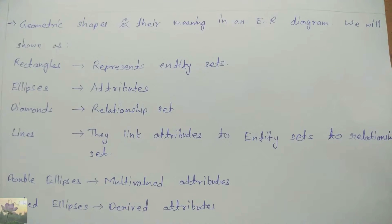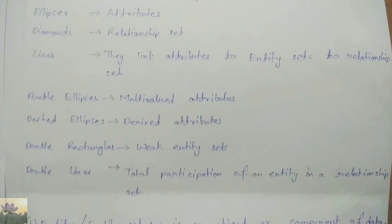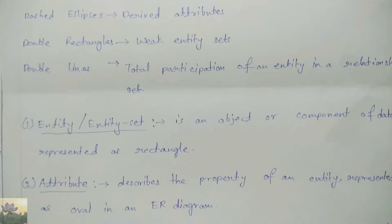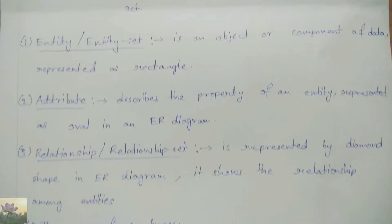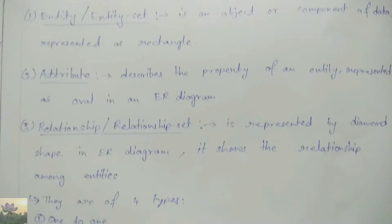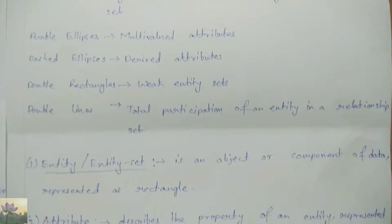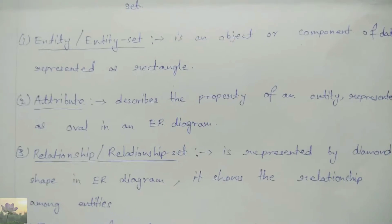In the ER diagram structure, different types of entities are represented by rectangles, and ellipses are the shapes used to describe their attributes. The diamond shape is used to represent the relationship among entities. Entities, attributes, and relationships are also referred to in terms of sets — entity sets, attribute sets, and relationship sets.